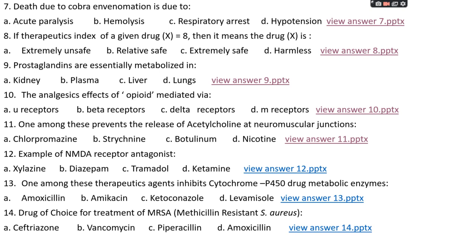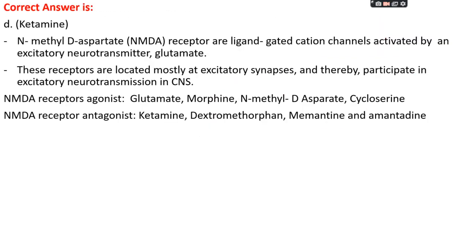Question number twelve: example of an NMDA receptor antagonist — option A: xylazine, option B: diazepam, option C: tramadol, or option D: ketamine. The right answer is option D, ketamine. NMDA receptors are ligand-gated cation channels activated by excitatory neurotransmitters like glutamate. These receptors are located mostly at excitatory synapses and participate in excitatory neurotransmission in the CNS. NMDA receptor agonists include glutamate, morphine, and methyl-D-aspartate.